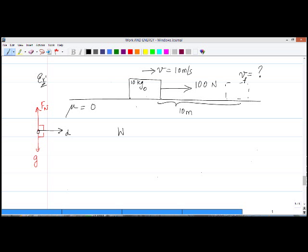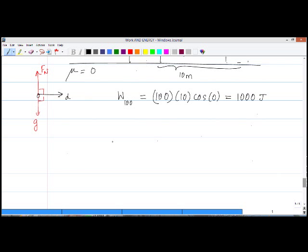So we have the work done simply by the 100 Newton force, which is the net force, and which will end up being 100 times 10 times cosine of zero, which equals 1000 joules. Now let's find KEi. Kinetic energy initially is equal to one half times 10 times 10 squared, which is 500 joules.